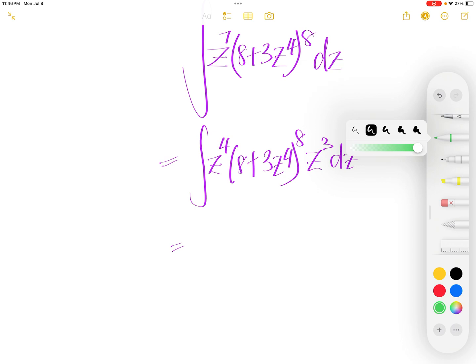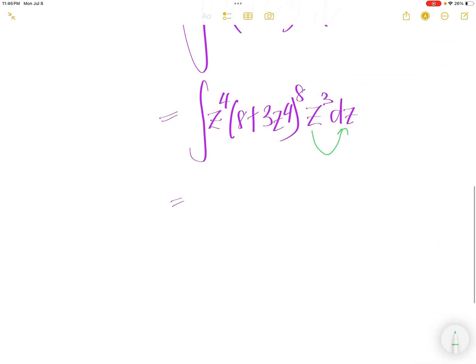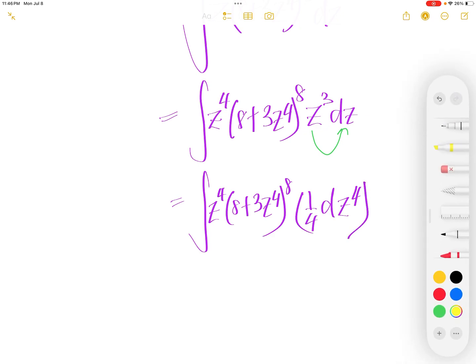Next, we are going to push this into here. It will be integral of z to the power of 4, 8 plus 3z to the power of 4, to the power of 8, dz to the power of 4. Derivative of z to the power of 4 is 4 comes down, cancel this one quarter, and then 4 less one will be z to the power of 3 dz.